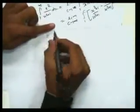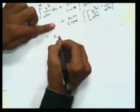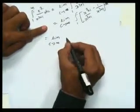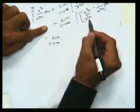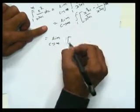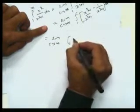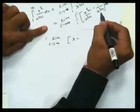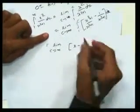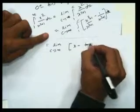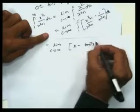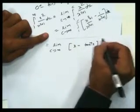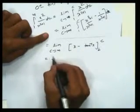This simplifies to the limit as c→∞ of the integral from 1 to c of [1 − 1/(x²+1)] dx. The integral of 1 is x, and the integral of 1/(x²+1) is arctan(x), so we get x − arctan(x) evaluated from 1 to c.